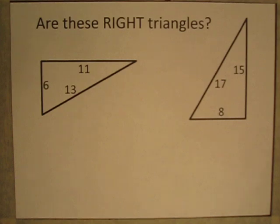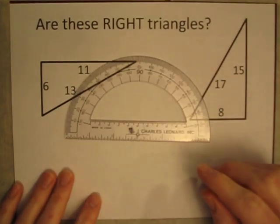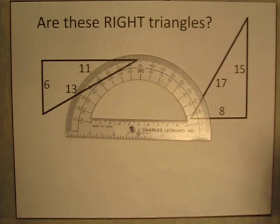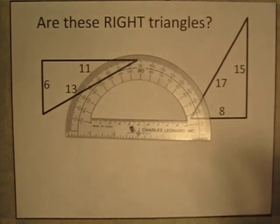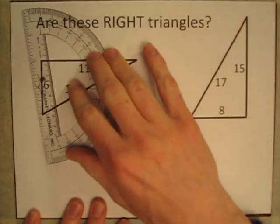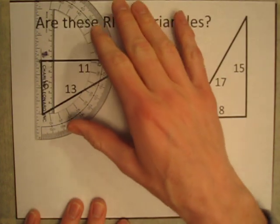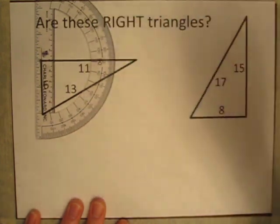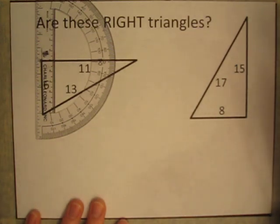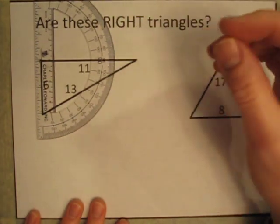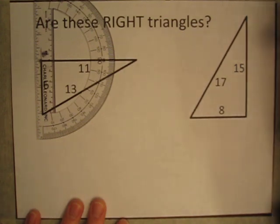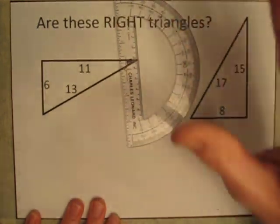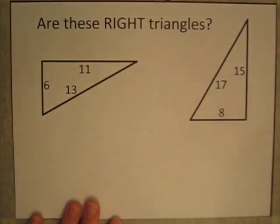So your first temptation might be to grab a protractor and try to measure the angles and see if there's a 90 degree angle in it. Protractors are useful and handy, and they can give you good approximations, but measuring things is always a little bit inaccurate — there's always a little bit of estimation involved. So I could bring this over and say yeah, that's about 90 degrees, but do I know that it's exactly 90? Could it be 89, 89.5, 89.9, or 90.1? We don't know for sure, at least using a protractor.